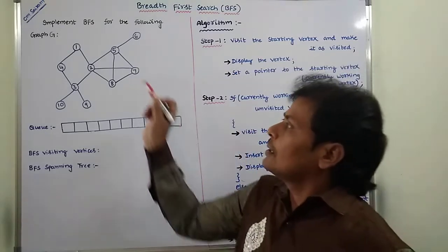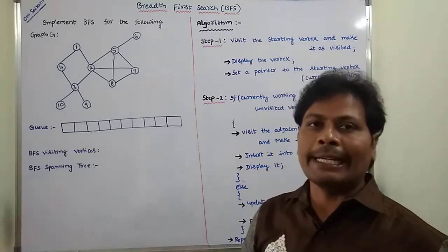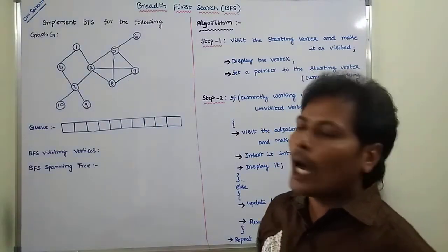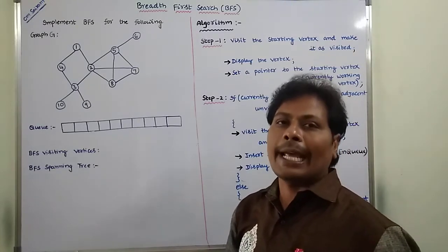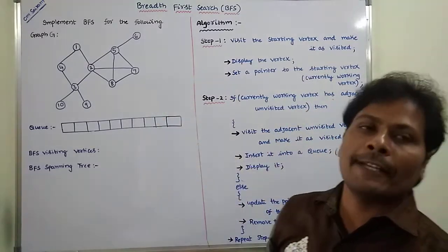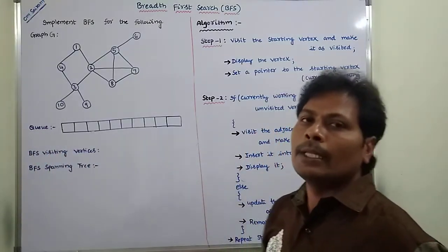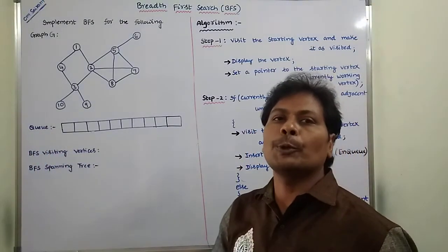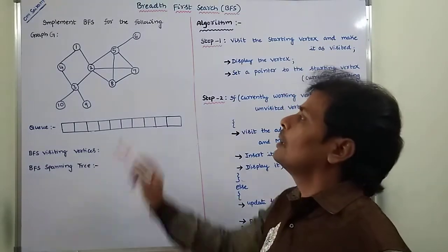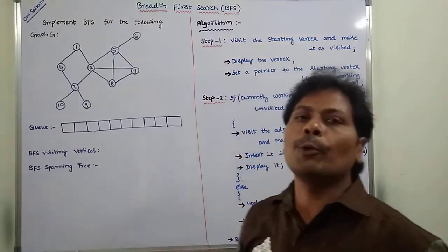Now this is the given graph. For this given graph, we have to find out the BFS spanning tree. In that graph there are 10 vertices. To implement BFS technique on that graph, we have to use a queue data structure. The size of the queue equals the number of vertices in the given graph, so we take the size of the queue equal to 10.